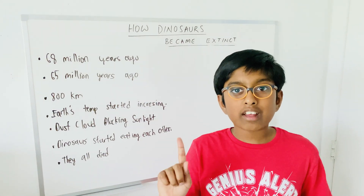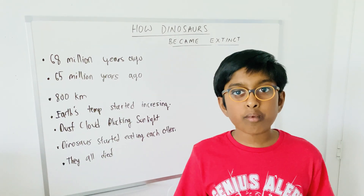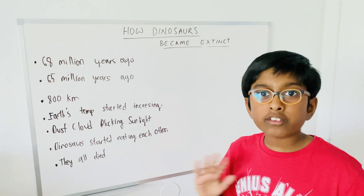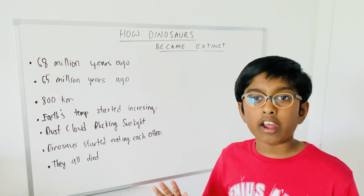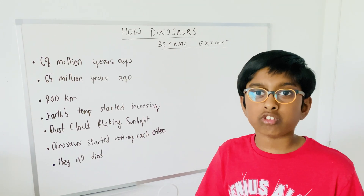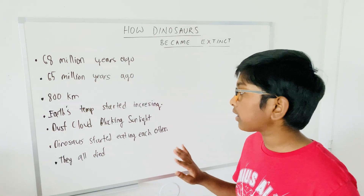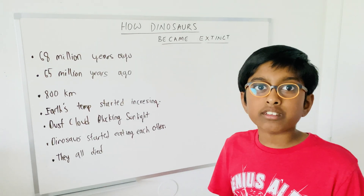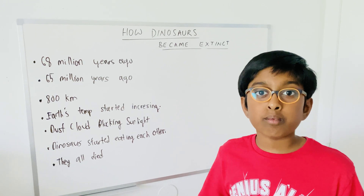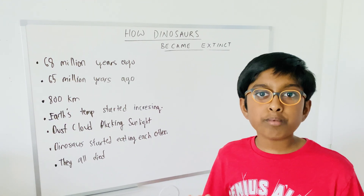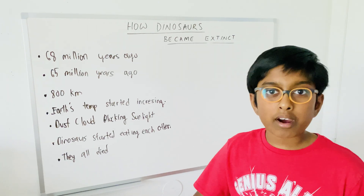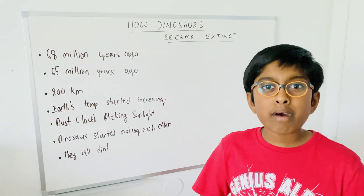This is the last summary before we end this video. In summary, we talked about how the dinosaurs became extinct, what caused them to become extinct, the dangers of an asteroid, the dust cloud, and the food chain. I hope you enjoyed this video — if you did, smash that like button. See you next time. Bye!